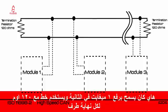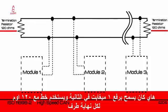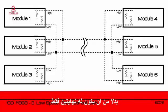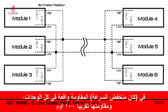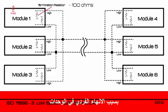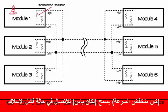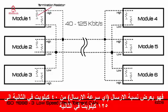High-speed CAN allows up to 1 Mbps and uses a linear bus with 120-ohm termination resistors located at each end. In low-speed CAN, instead of having two termination resistors at the ends, termination resistors are located at each module with an overall resistance of around 100 ohms. Low-speed CAN allows the CAN bus to communicate even in case of wire failure, and offers a transfer rate from 40 to 125 kbps.